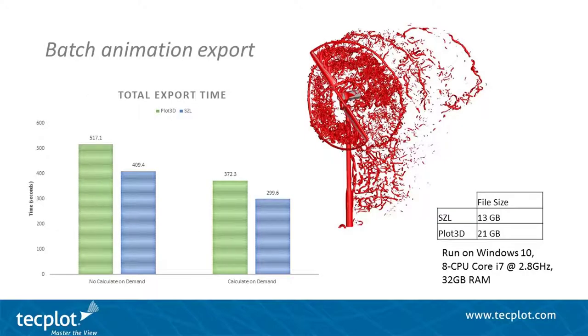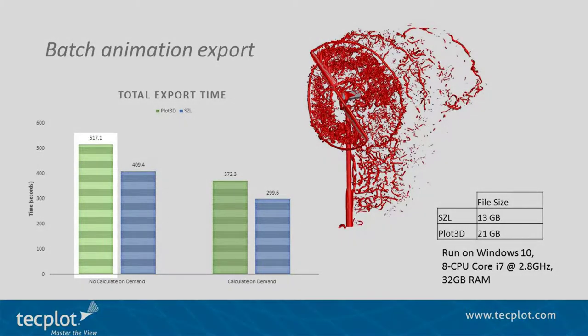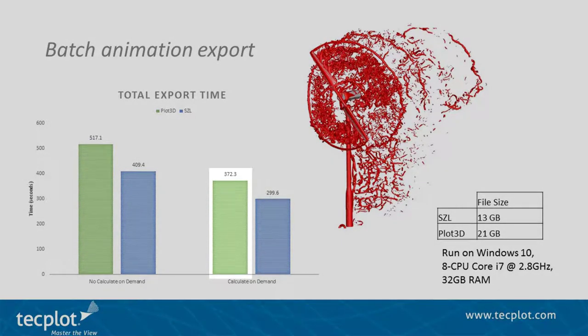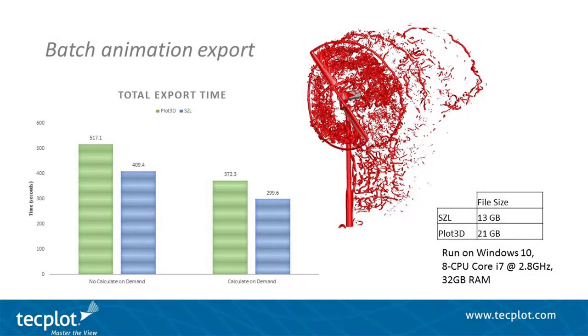When run in batch mode, the total time to load the data, calculate Q, and generate an image with an isosurface at Q equals 0.01 without Calculate on Demand was 517 seconds for the plot3D file and 409 seconds for the sizzle file. Using Calculate on Demand was 27% faster, taking 372 seconds for the plot3D file and 299 seconds for the sizzle file. Additionally, the sizzle file is 35% smaller at only 13 gigabytes.